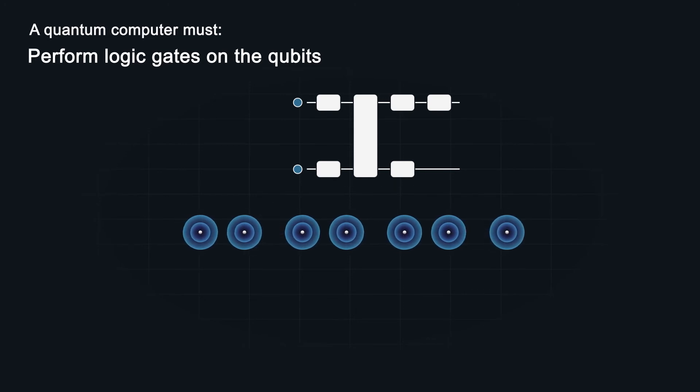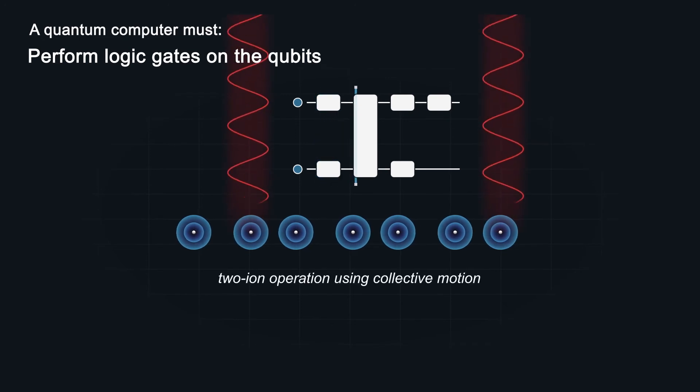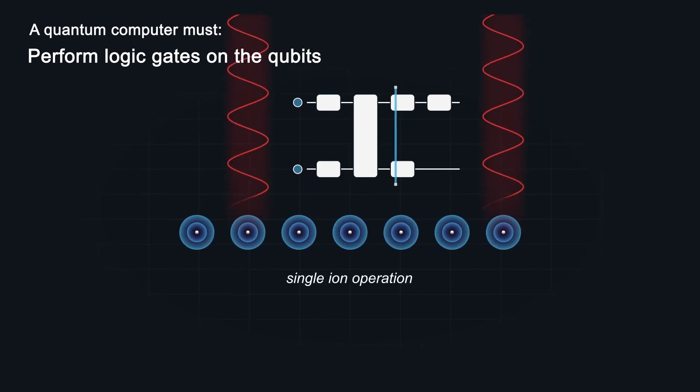In an ion trap, neighboring ion qubits are connected through their collective motion. This happens because of their electrical repulsion. Laser pulses target the motion enabling gates between any pair of qubits.